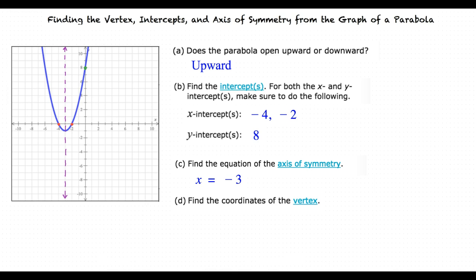Last but not least, in part D, we're being asked to determine the vertex of this parabola. What do you think the answer is? Well, since this parabola opens upwards, that means the vertex is the lowest point on the graph. So, wouldn't the vertex be negative 3 comma negative 1?